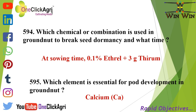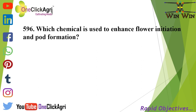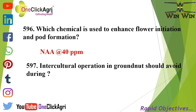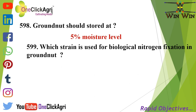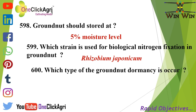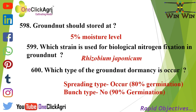Which chemical is used to enhance flower initiation and pod formation? NAA at 40 ppm. Intercultural operations in groundnut should be avoided during the pegging stage. Groundnut should be stored at 5% moisture level. Which strain is used for biological nitrogen fixation in groundnut? Rhizobium japonicum. Which type of groundnut shows dormancy? Spreading type and bunch type.